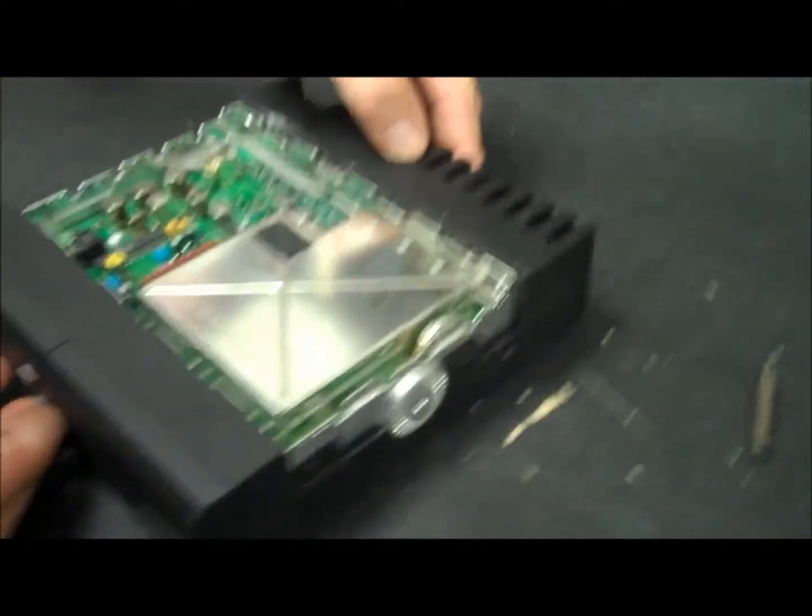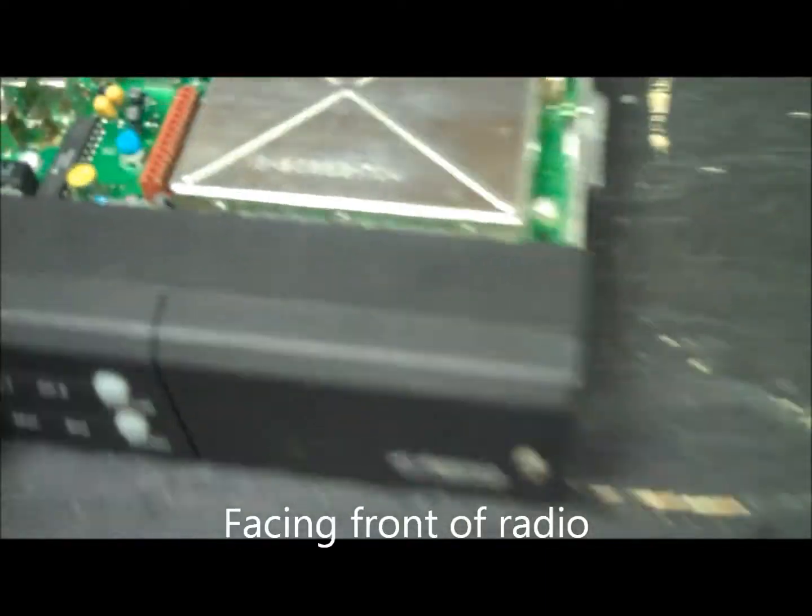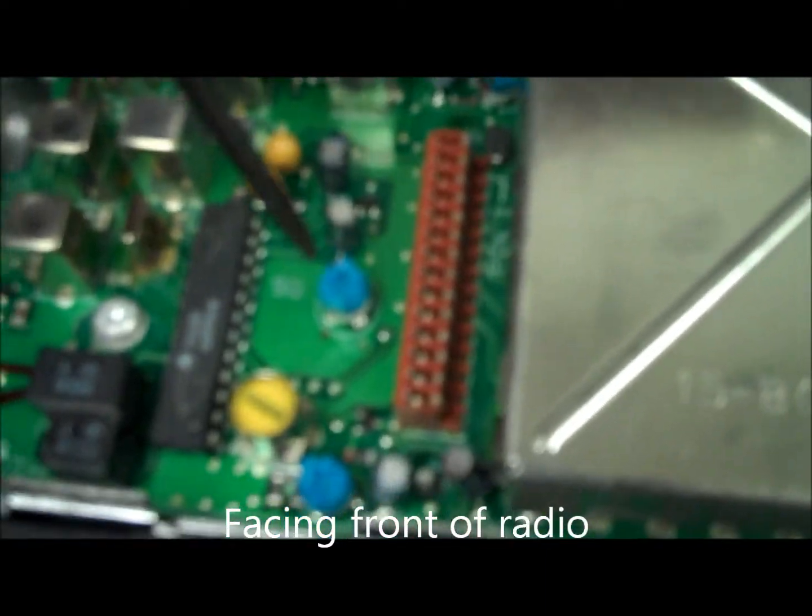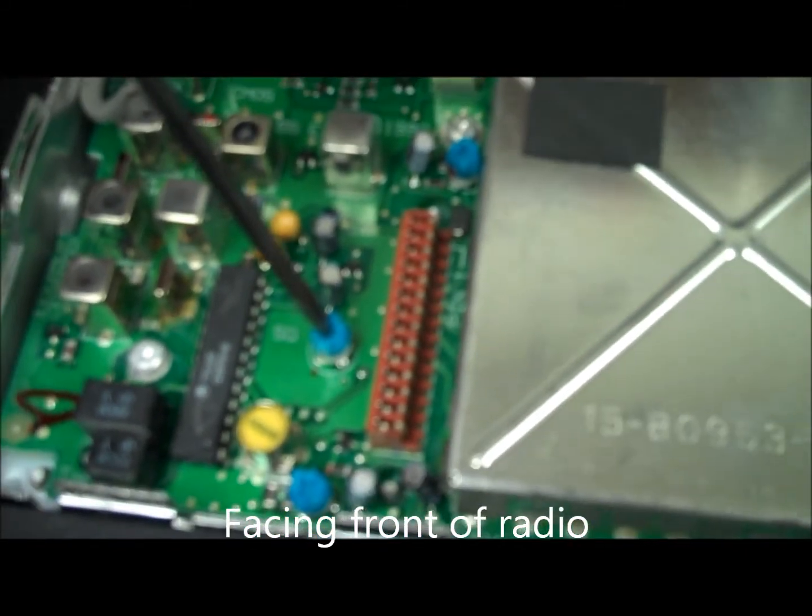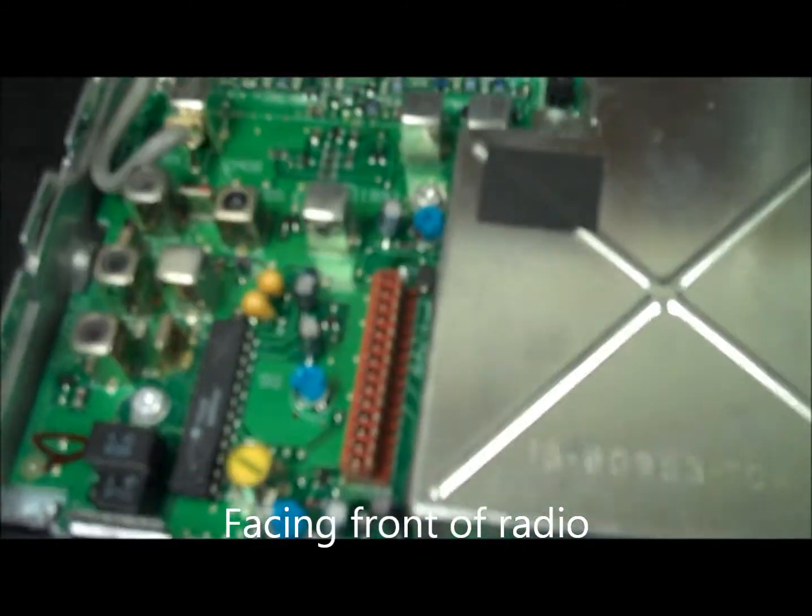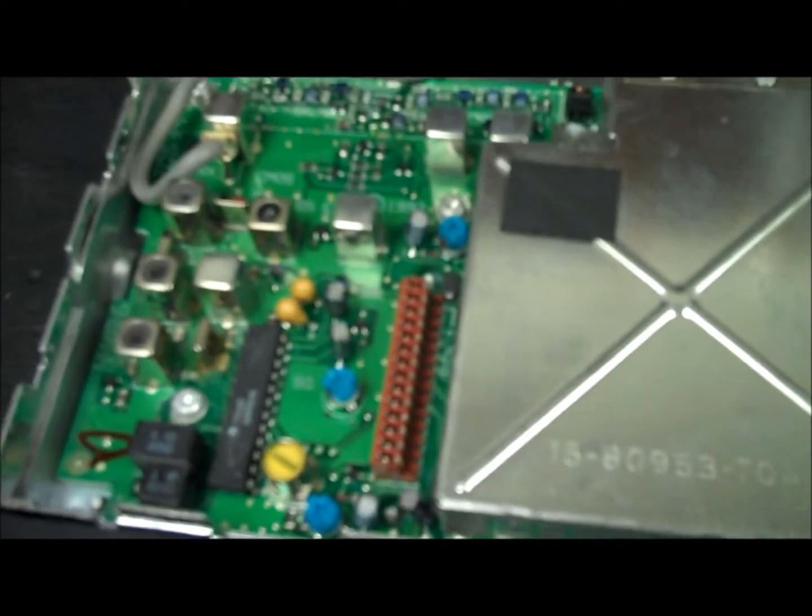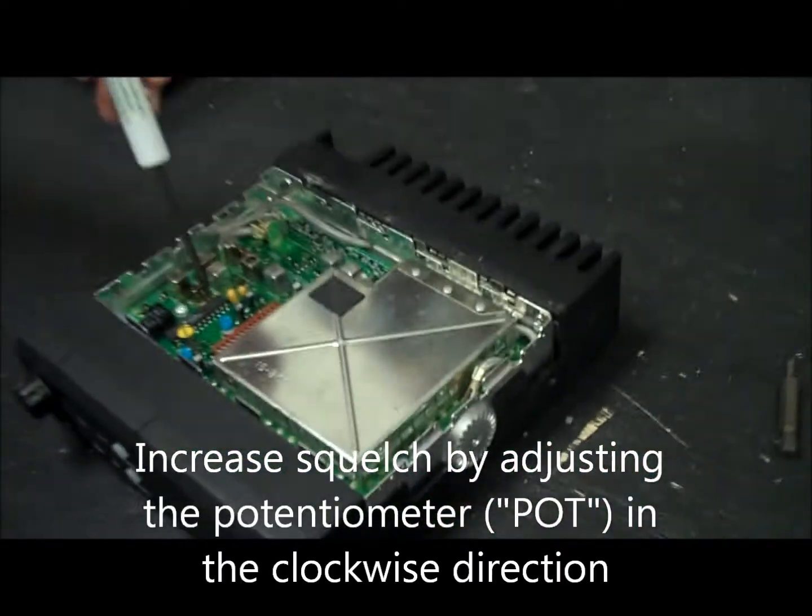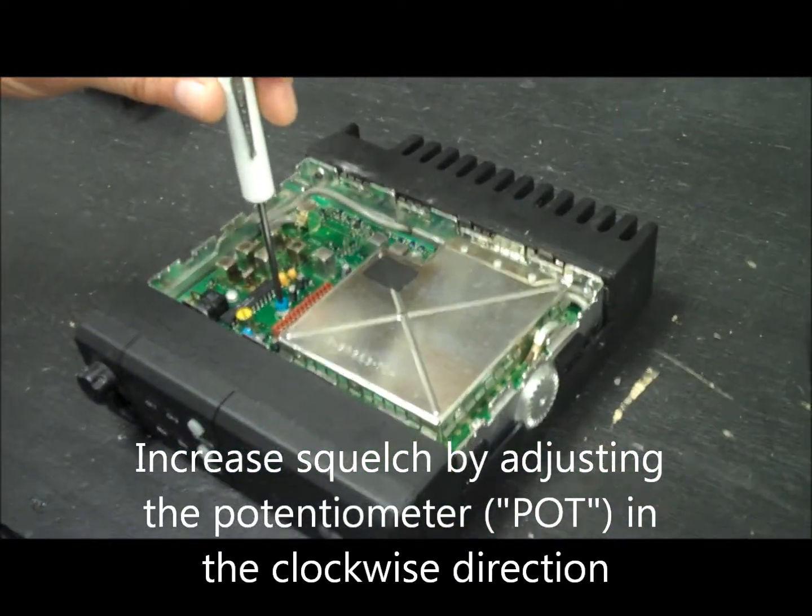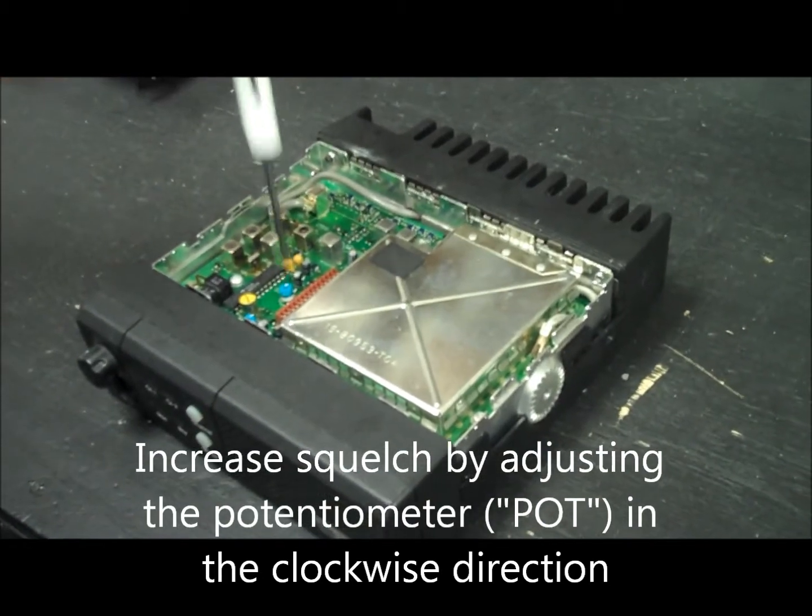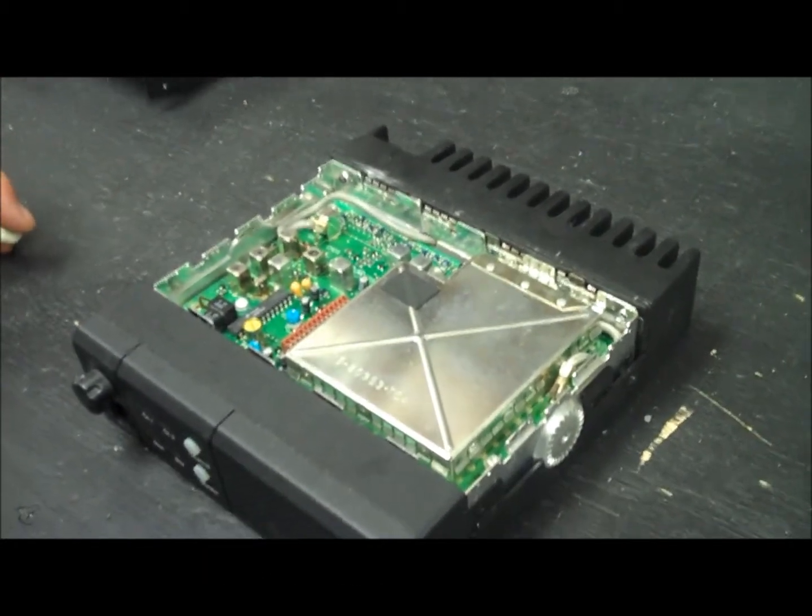So now we're looking at the front of the radio again. Shows which one that is. That's the squelch pot, and it even has SQ written to the left. I'm going to turn it clockwise all the way. I want to increase the total amount of squelch.